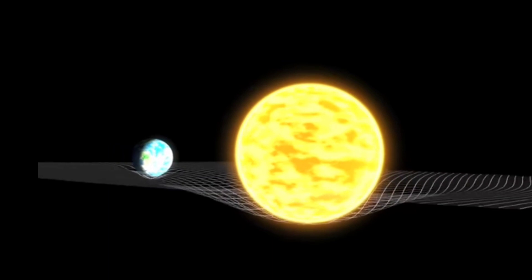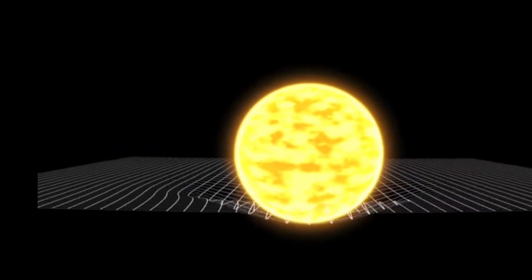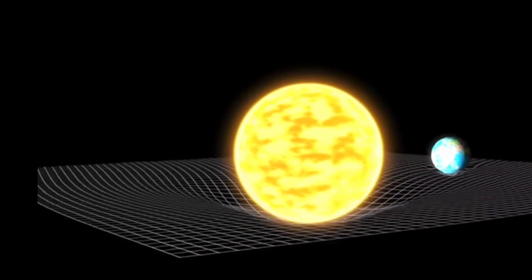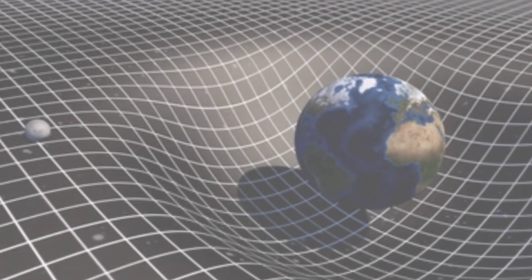The Sun is a heavy mass object. It bends space and time and forms curvature. Earth and other planets rotate around the Sun. The Moon rotates around Earth due to this curvature formed by Earth.